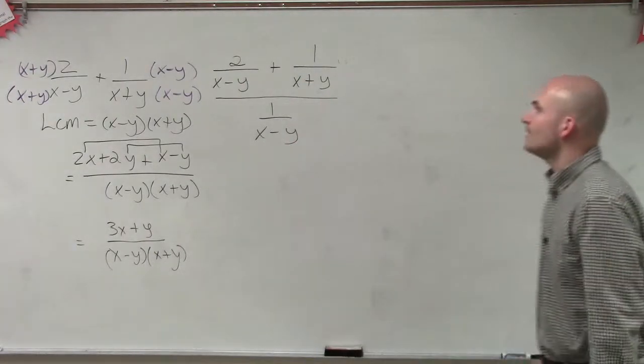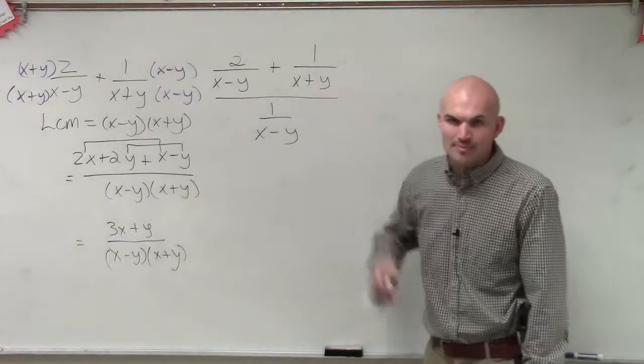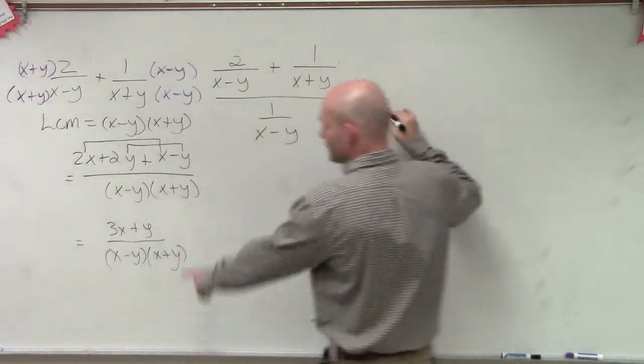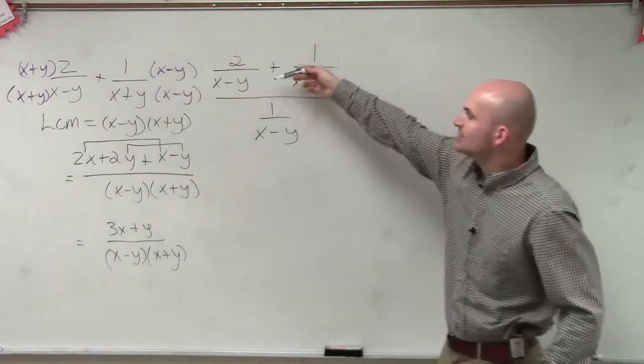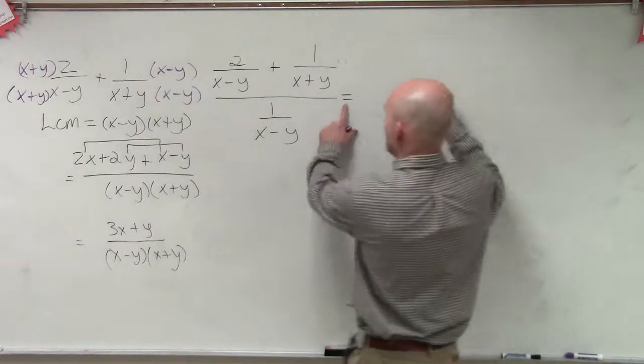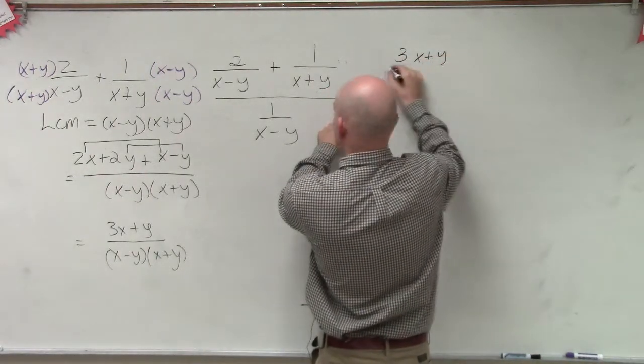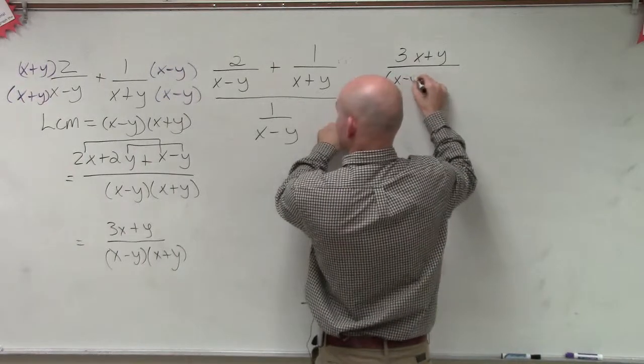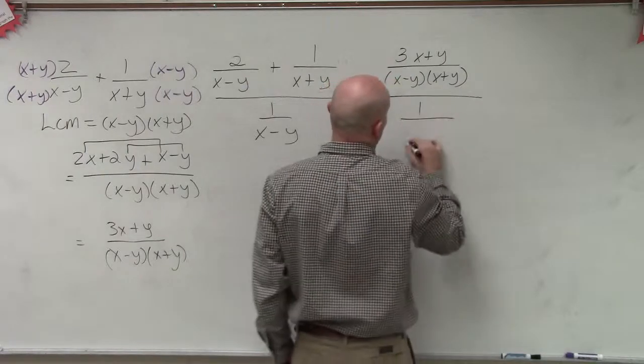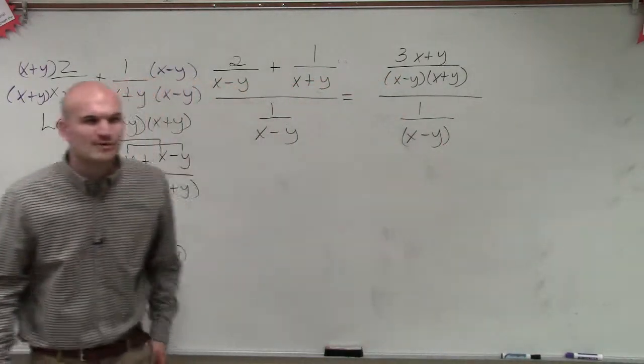So now why would I do all that stuff? Why would I spend all that time to add these up? Well, if I rewrite this problem, rather than saying 2 divided by x minus y plus 1 over x plus y, if I write this as 3x plus y divided by x minus y times x plus y, then divide that by 1 over x minus y, what does this look like now? What are we now doing?